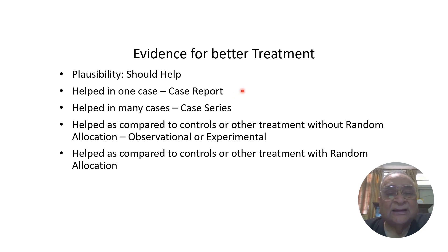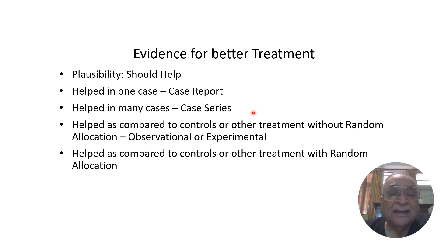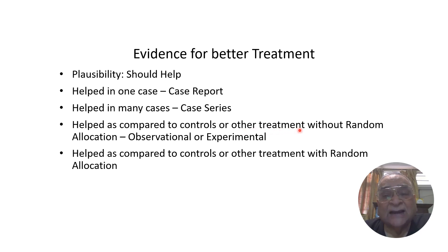Supposing there is one case in which it did help — that is called a case report. Many cases in which it did help is called a case series. Up to this point, all evidence belongs in the dustbin because they do not have controls. What happened in case you did not give this treatment — that is control. Any treatment must help as compared to controls or other standard treatments, and if this is without random allocation, then there can be other factors that can explain the results.